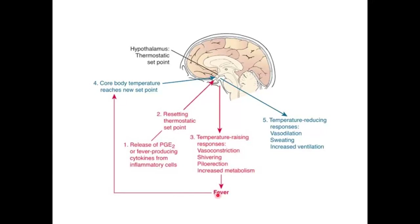Once the fever reaches the new set point and the inflammatory cells stop releasing chemicals, the body works to cool down. You'll see vasodilation causing flushing in the cheeks, sweating — a fever breaking with pouring sweat means you're starting to cool off — and increased ventilation. That PGE2, prostaglandin E2, is the fever-producing cytokine secreted by inflammatory cells that tells the hypothalamus to raise temperature, triggering the whole cascade.